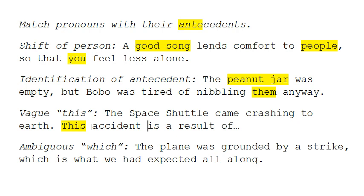The same thing applies to sentences using 'which.' For example: 'The plane was grounded by a strike, which is what we had expected all along.' What was expected — the plane? The grounding? It's not clear. In the case of using 'this' or 'which,' it's often necessary to rewrite the sentence in order to match the pronouns with the antecedents correctly.